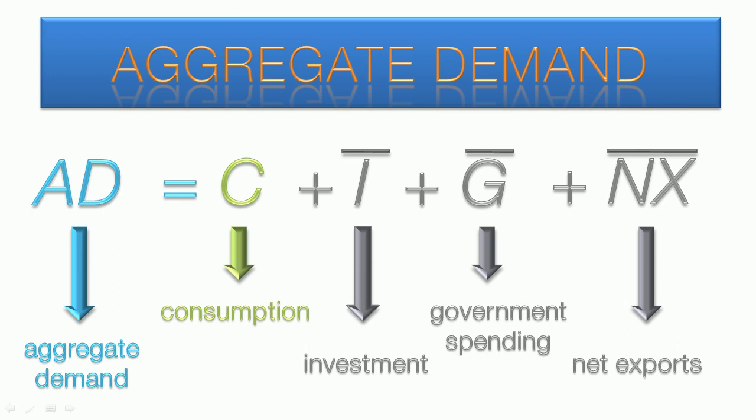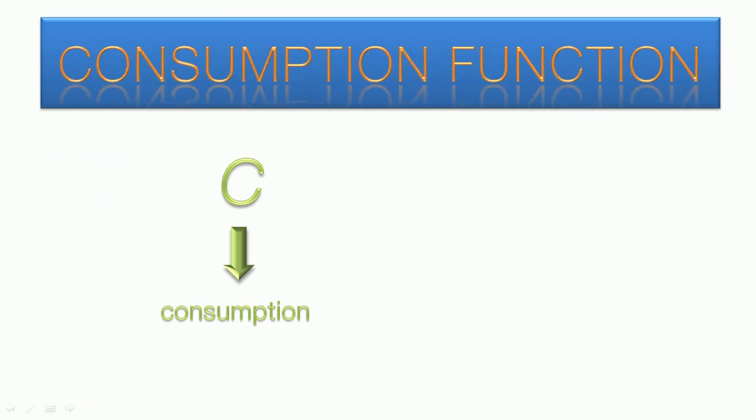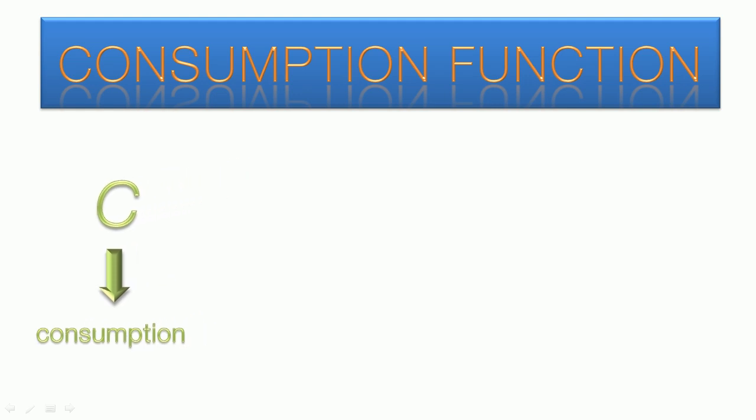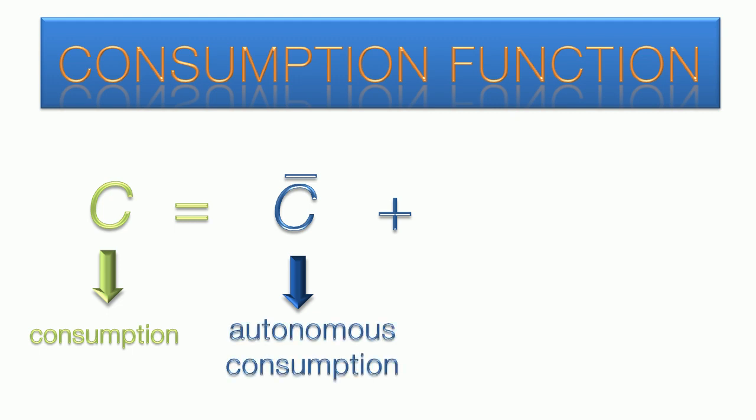To begin we're going to look at how consumption is related to income. We're going to break down consumption into its separate components, beginning with autonomous consumption. This is the base level of consumption. In this model, consumption cannot fall below the autonomous level, regardless of what people are making as income.